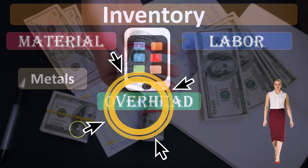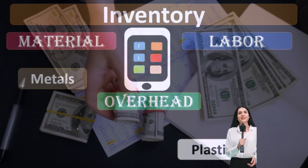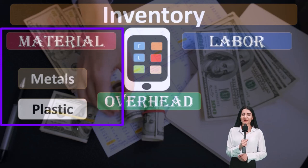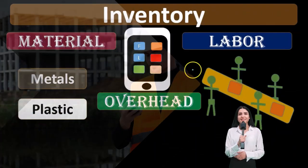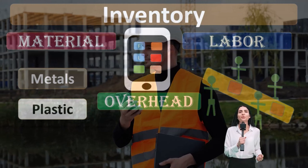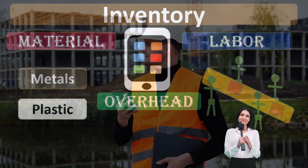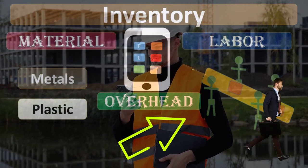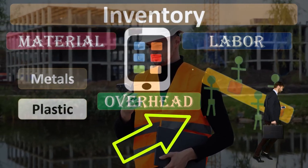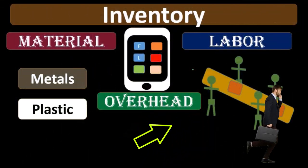The materials will consist in this case of metals and plastic, but of course the conversion is going to be a huge factor including the labor. Now if that labor can be applied directly to the unit or the process or the batch, then we're going to call that direct labor because we can apply that out directly.